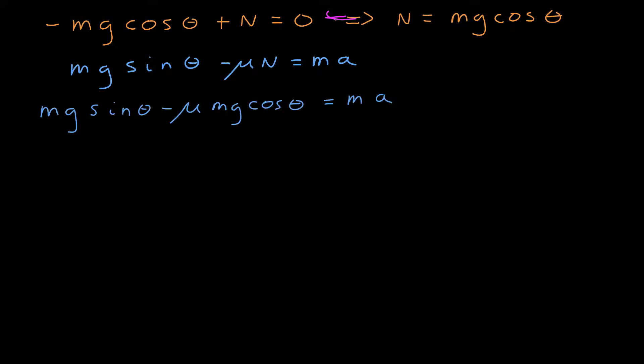The orange one gives me that the magnitude of the normal force is equal to mg cosine theta. If I substitute that into here, I get this. It looks like I can divide out a mass from every term. I bring this term over to the other side, because I want it to be positive. And then I bring a to the other side, which makes it negative.